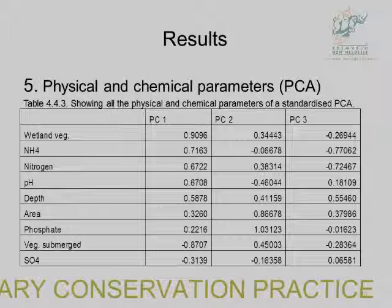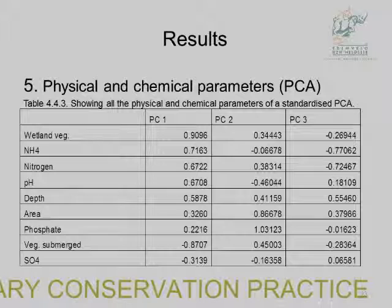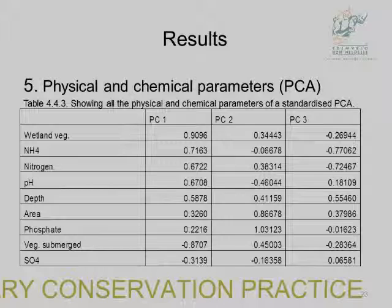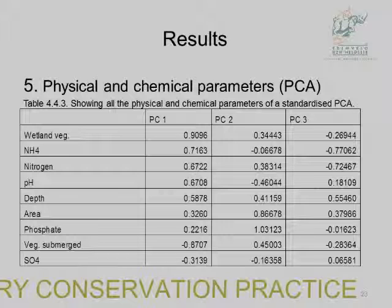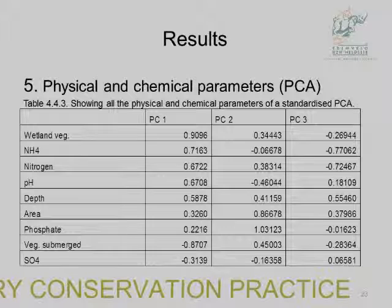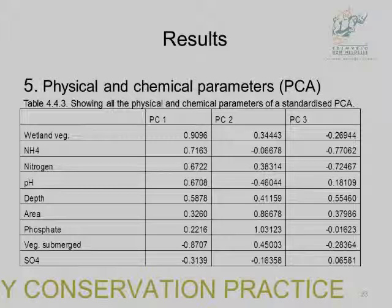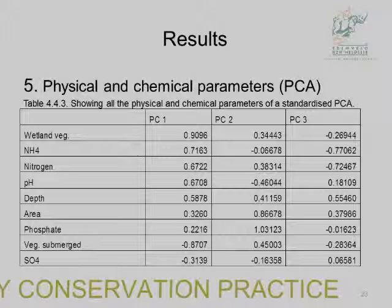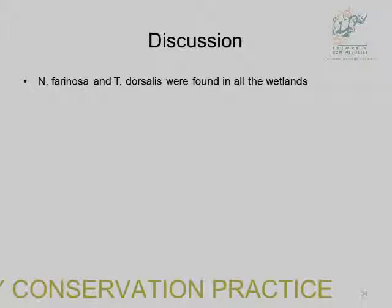Looking at the principal component analysis of physical and chemical parameters: wetland vegetation became the most important driver in PCA1, explaining about 90% of the difference. The size of the wetland was important in PCA2, and water depth was also significant.